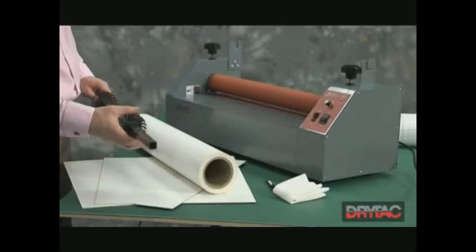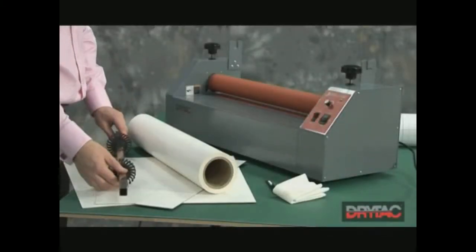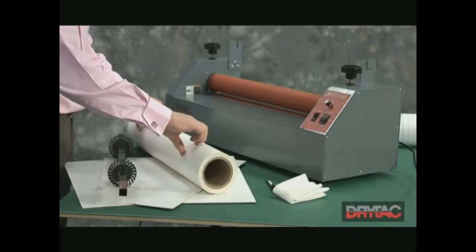We'll now show you what the dispenser bar and the cord locks are for. This is a product called self-wound mount film.